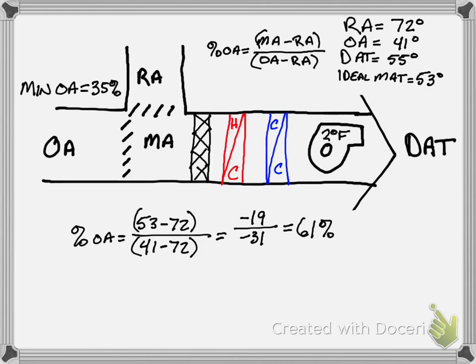And we need to know what our minimum is. In this case, we have a minimum outside air percentage of 35% shown here. So because 61% falls within the range of 35% to 100%, we know that we're able to make 53 degrees of cold air at the mixed air temperature plenum, and we are able to supply 55 degrees after the fan heat, and we have no need for heating or cooling.